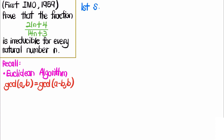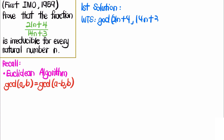In the first solution, we utilize the Euclidean algorithm. Recall that the Euclidean algorithm enables us to compute the GCD of two integers a and b, and the GCD of a and b is equal to the GCD of (a − b) and b. To prove that this fraction is irreducible, we want to show that the GCD of 21n + 4 and 14n + 3 equals 1, since that means they share no integer factor greater than 1.